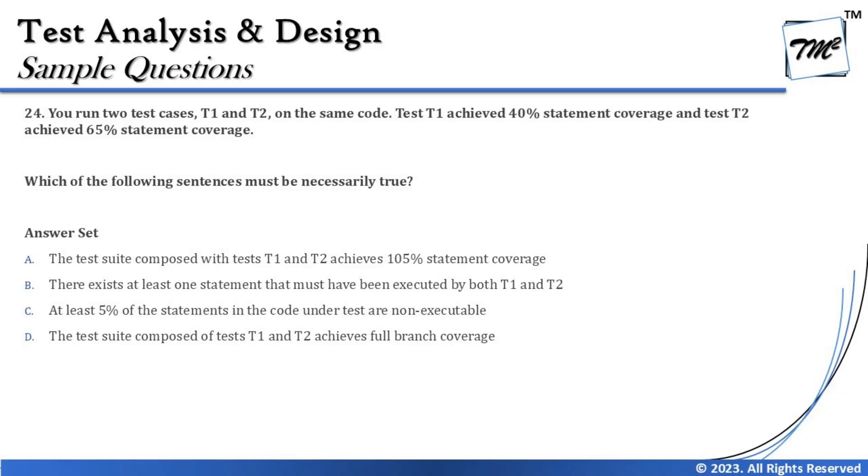Option D says the test suite composed of T1 and T2 achieves full branch coverage. Two issues: first, the question is about statement coverage, so there's no direct relationship to branch coverage — these are two independent techniques. Second, we have learned that 100% branch coverage guarantees 100% statement coverage, but not vice versa. So even if T1 and T2 together attempt full statement coverage, it is not necessarily true that they cover 100% branch coverage.